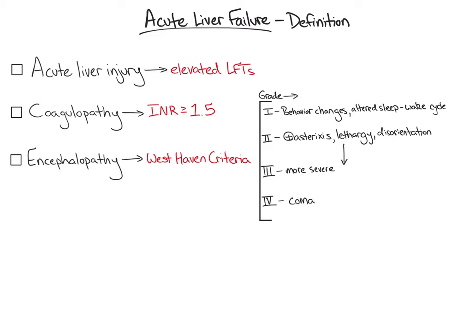Why are these grades important to recognize in a patient with acute liver failure? The answer: cerebral edema incidence. Cerebral edema is rarely observed in patients with grade 1 and 2 HE. However, the incidence increases to 25-35% in patients with grade 3 and 65-75% in patients with grade 4. We will talk about cerebral edema in more detail later in the video.